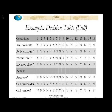Each column in the decision table says: under this particular combination of conditions, take these actions and don't take those actions. For example, take a look at column 7 — if it's a real account but not an active account, it's not within limit, location is not okay, then do not approve the transaction, call the cardholder, and call the vendor. Rule number one, the happy path: it's a real credit card account, it is active, it is within its credit limit, and the location of the charge is fine — approve the charge, do not call the cardholder, do not call the vendor.